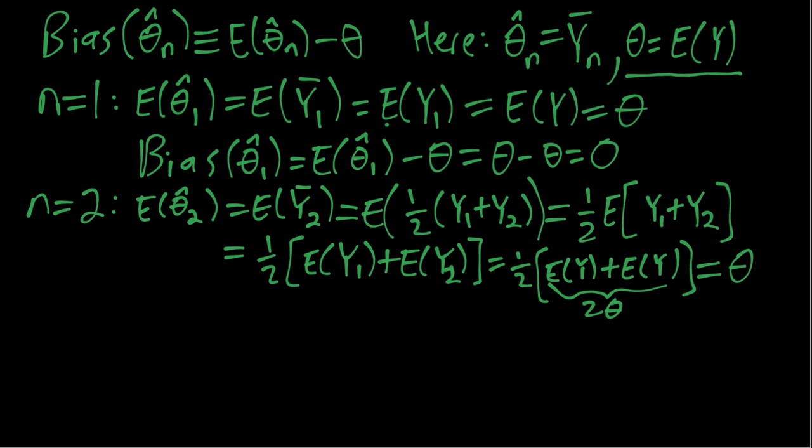So it takes some more steps and using some more properties of the expectation operator, but again the conclusion is the same: that the mean of our estimator is equal to the population parameter we're trying to estimate. So again the bias is zero, or in other words the sample mean is an unbiased estimator of the population mean.